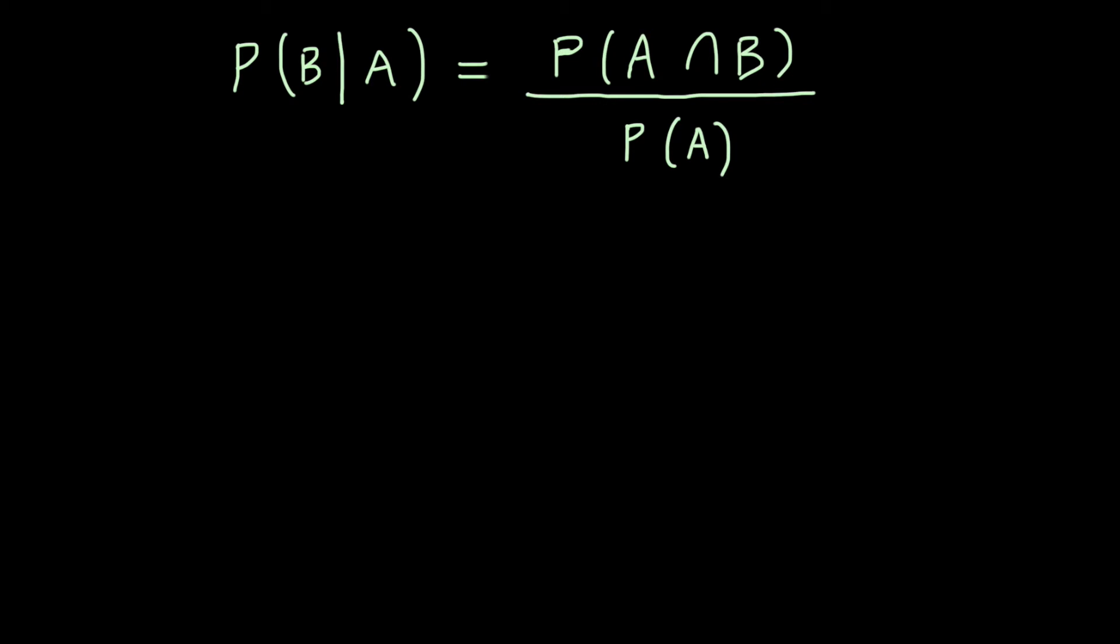So what I mean by this is say we have two events, A and B, then the conditional probability of event B given A, that's what this sign means, this means given, so the probability of B given A is the probability of A and B divided by the probability of A.